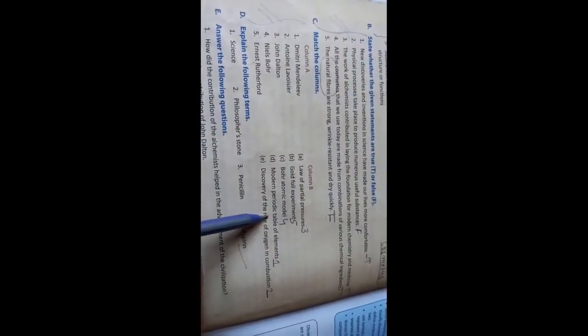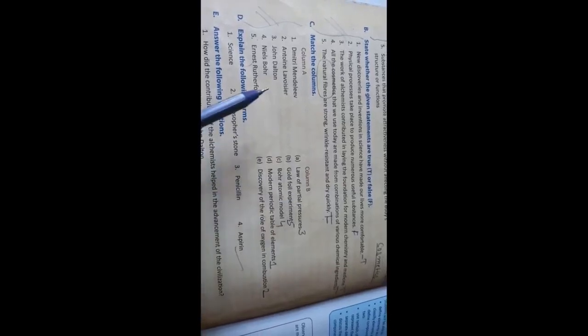Then match the columns: Dimitri Mendeleev - Modern Periodic Table, D number. Lavoisier - E number. John Dalton - A number, Modern Atomic Theory. Niels Bohr - Bohr atomic model. Ernest Rutherford - Gold foil experiments. You can match from here. Rutherford found the Gold foil experiment, Niels Bohr - Bohr's model, and John Dalton - Modern Atomic Theory.